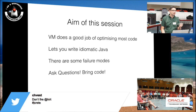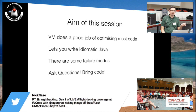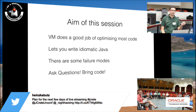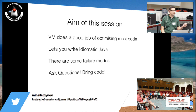The aim of this session is basically to understand that the VM does a good job of optimizing most Java code and lets you get away with writing idiomatic Java. You don't have to worry about writing really ugly code to get decent performance from the VM. But there are a few failure modes and we're going to look at some examples where the VM succeeds and sometimes where it doesn't. I want this to be very question and answer — feel free to interrupt at any time.